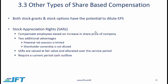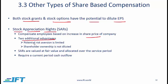Both stock grants and stock options have the potential to dilute earnings per share. So some companies work with stock appreciation rights, or SARs. Here, companies compensate employees based on an increase in share price — actual shares or options are not given, but compensation is tied to the change in share price. The advantages are that potential risk aversion is limited and shareholder ownership is not diluted. SARs are valued at fair value and allocated over the service period. A disadvantage of SARs is that they require a current period cash outflow.